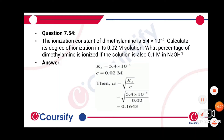The ionization constant of dimethylamine is 5.4×10⁻⁴. Calculate the degree of ionization in its 0.02M solution. We are given that Kb = 5.4×10⁻⁴.